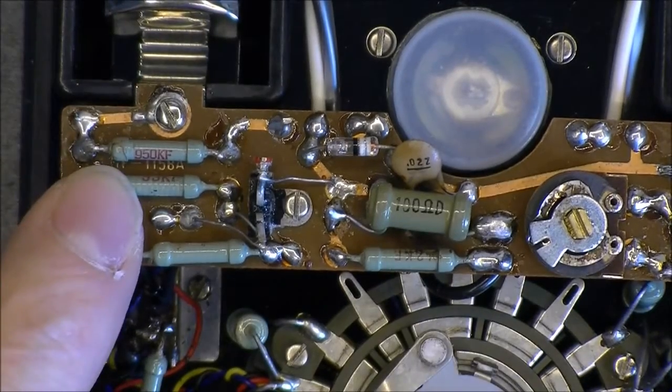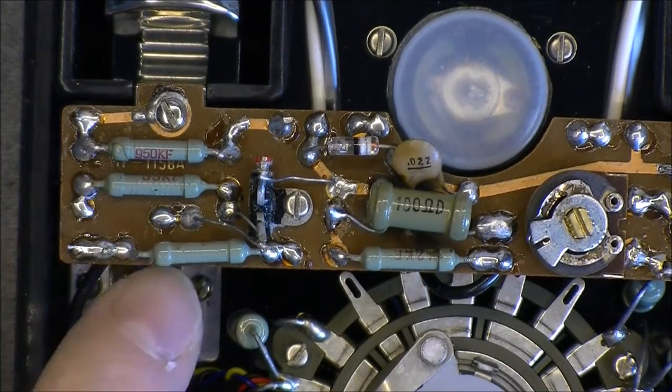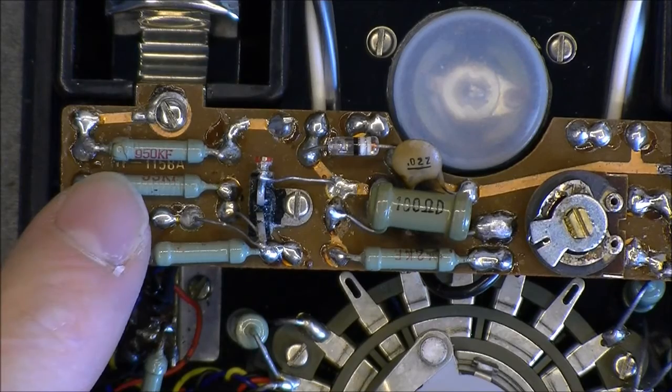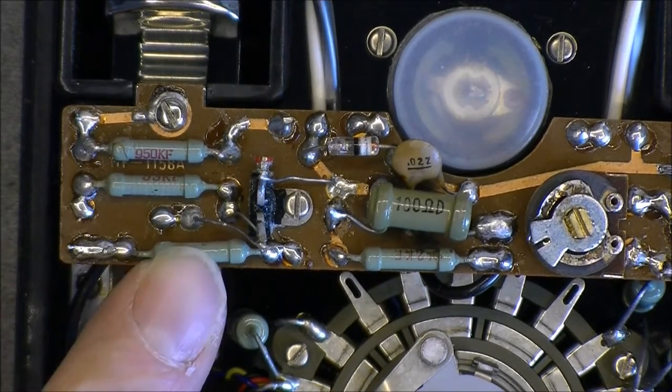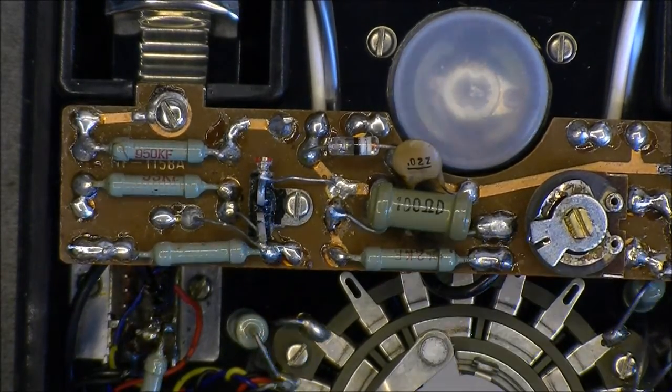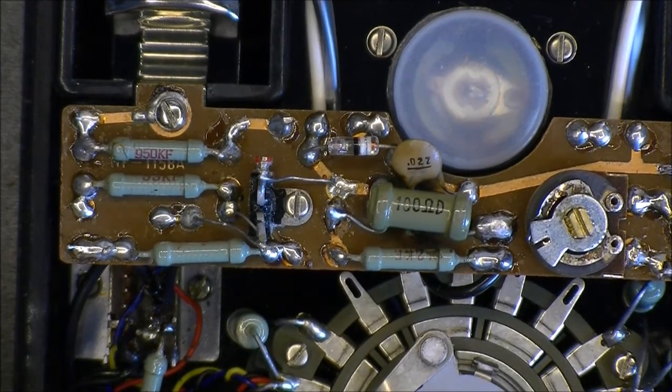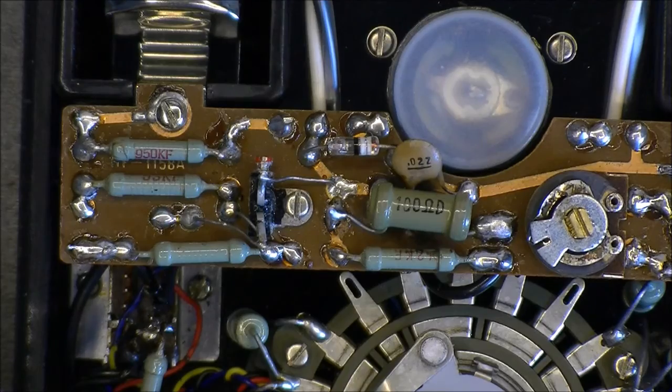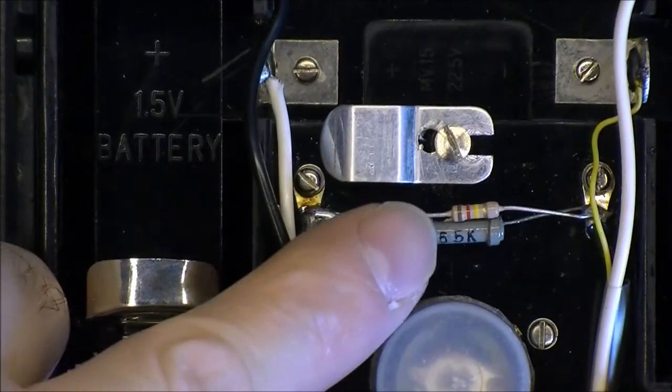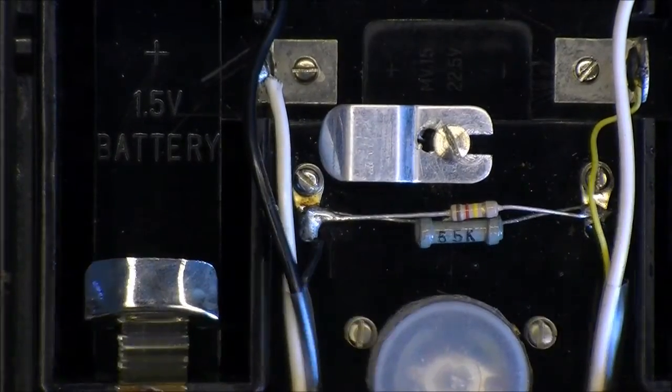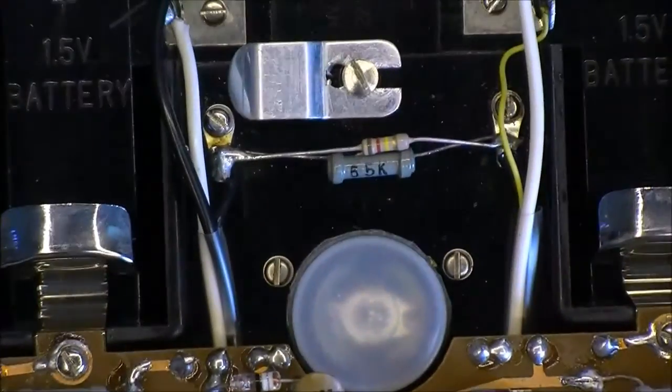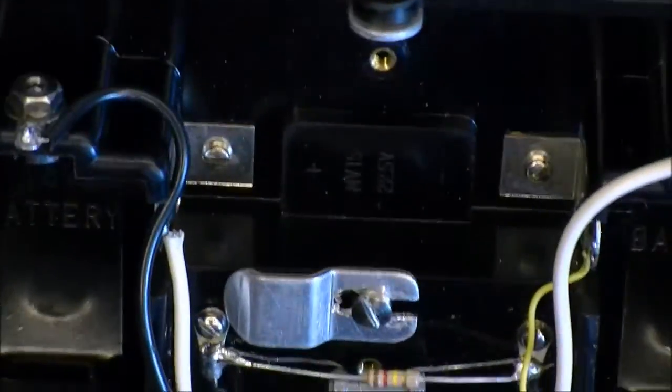In fact, they are very similar to East German made resistors for some reason. Quite weird. Here we have a regular resistor with color code, at least. And the meter movement is enclosed in this part of the device.